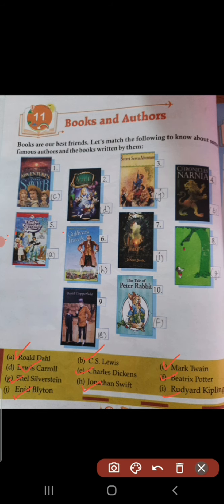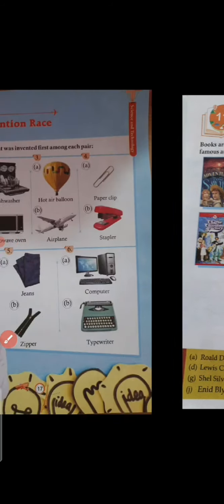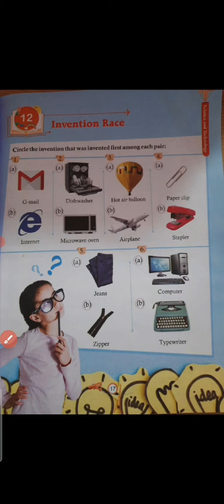This is about chapter number 11, Books and Authors. Now move to the next chapter, that is Inventions. Inventions such as new tools, devices, processes and medicines have provided significant benefits to society. They provide new ways to build, move, communicate and learn. In this chapter we have to circle the invention that was invented first among each pair. So let us watch our video.